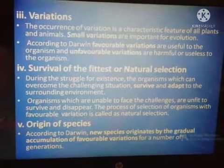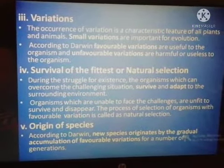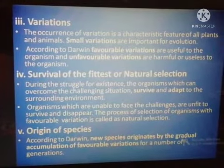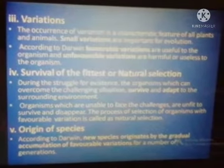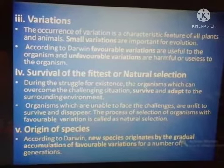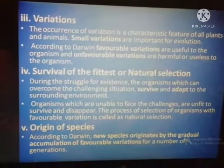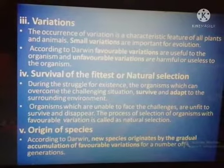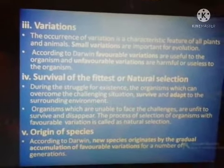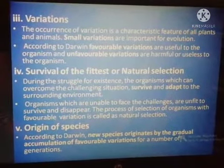Next is Variations. The occurrence of variation is a characteristic feature of all plants and animals. These small differences among individuals are important for evolution. According to Darwin, favorable variations are useful to the organism, while unfavorable variations are harmful or useless to the organism.